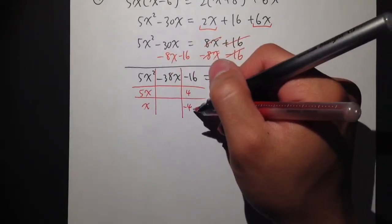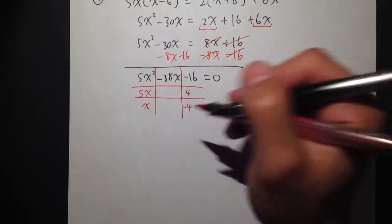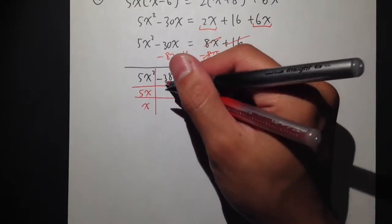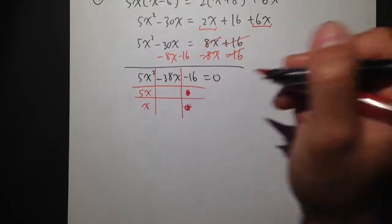5x times negative 4, that will be negative 20. And then 4 times x is 4x. I have no way to get negative 38 with this combination. So I'm not going to do it with this combination.